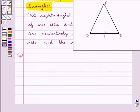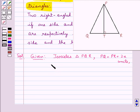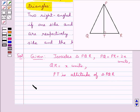So here we are given the isosceles triangle PQR in which we have PQ = PR = 2x units. Then QR = x units and PT is the altitude of triangle PQR. We need to find the length of PT.